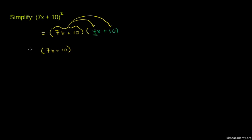Then distribute 10 across (7x + 10). Using the distributive property, multiply each term by each term.